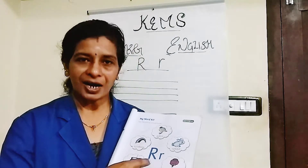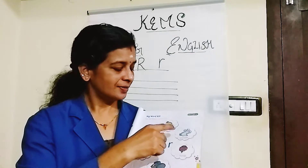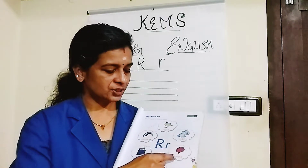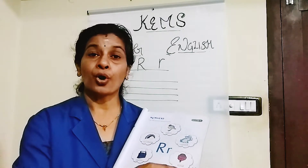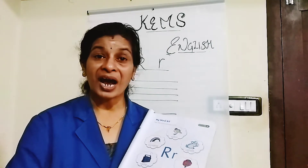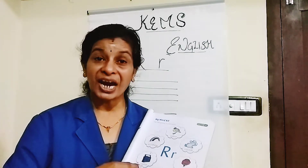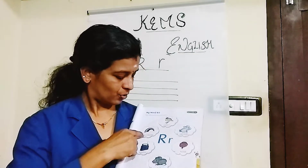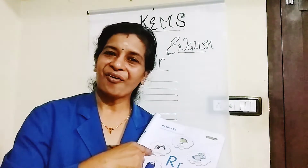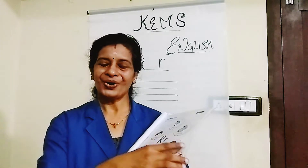One more time: R for Robin, Rabbit, Rose, Rat, Radio, and Rainbow.